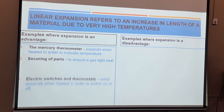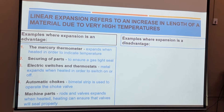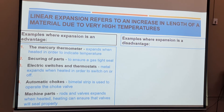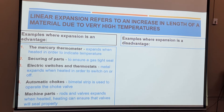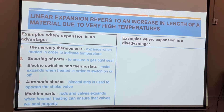What are examples in real life that show expansion? Firstly, the mercury thermometer — the mercury inside expands when heated in order to indicate temperature. Inside the bowl you have the liquid, in this case mercury. When placed underarm, it senses the heat and the mercury expands into that narrow tube for us to read the temperature. For securing parts, if you want to ensure a gas-tight seal, you heat one part so it opens up, fit the other part in, then allow it to cool. When it cools down and shrinks back, it ensures a gas-tight seal.